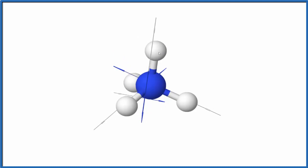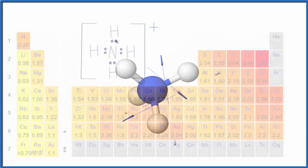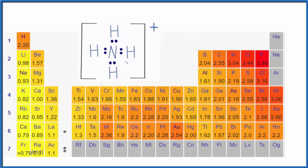So the NH4+ ion is nonpolar. Let's go back to our Lewis structure. To recap, the ammonium ion NH4+ is nonpolar because of the symmetrical shape of the molecule, and the positive charge is distributed over the entire ion.